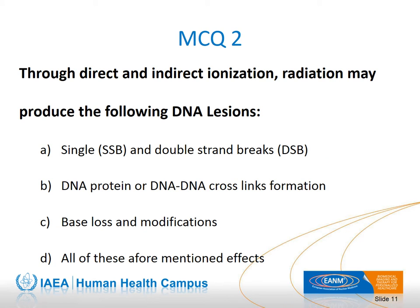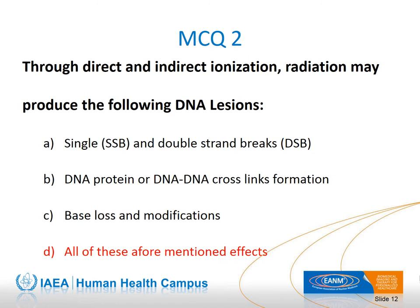The next multiple choice question: through direct and indirect ionization, radiation may produce the following DNA lesions. The right answer is D — all of the aforementioned effects may be produced by irradiation.